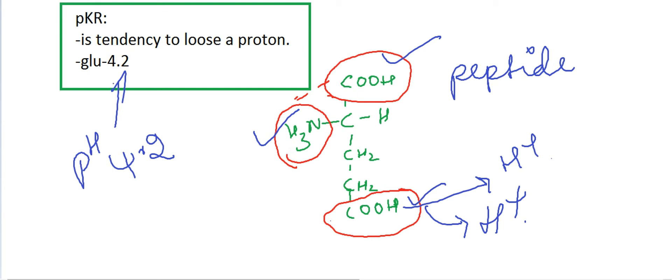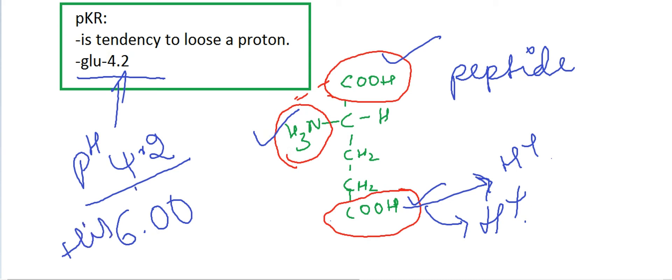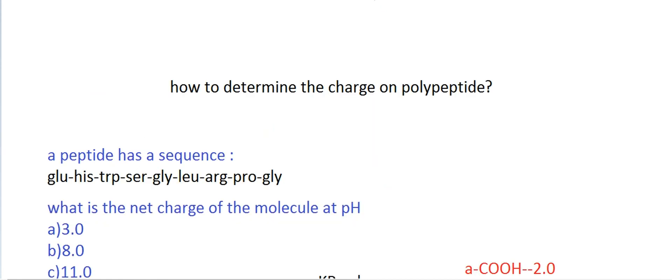Only at a particular pH does a molecule show the tendency to lose a proton — not at every pH. So when we see the pKR of glutamic acid is 4.2, it means at pH 4.2 it starts to lose its proton. Similarly, histidine's pKR is 6.0, meaning at pH 6.0 it starts to lose a proton from its side chain. Keeping this concept in mind, we'll continue our learning.